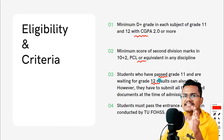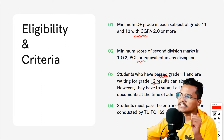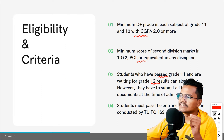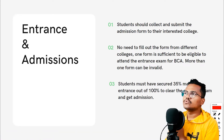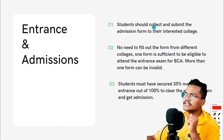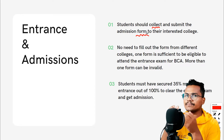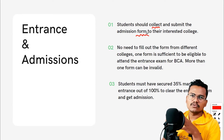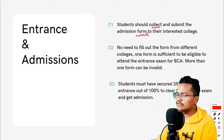If you have passed Class 11 and are waiting for Class 12 results, you can still apply. Regarding the entrance exam: you need to download the form from the respective college or university website and submit it within the given timeframe.